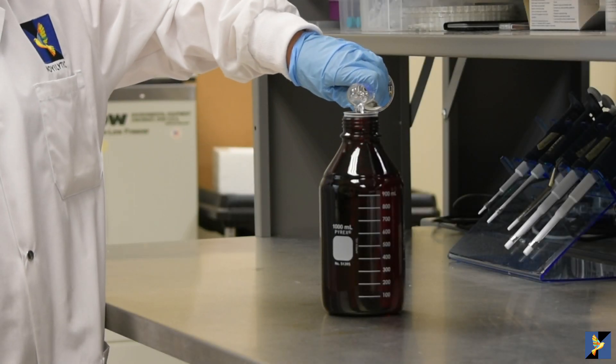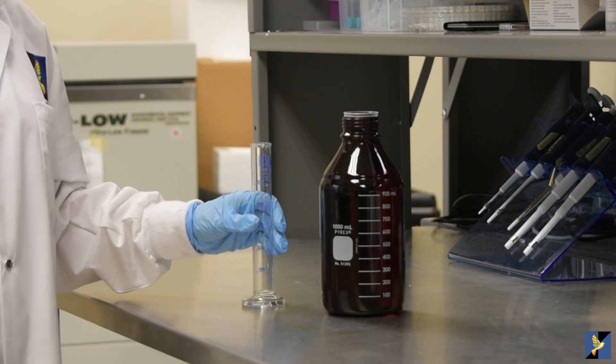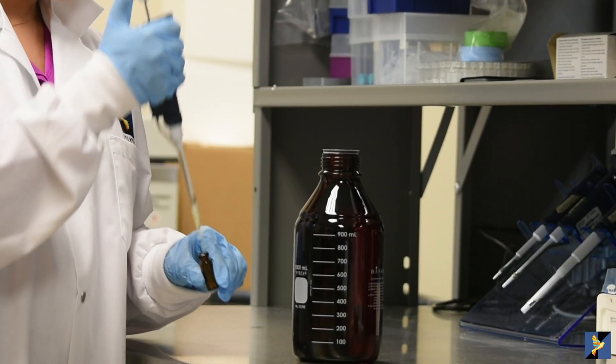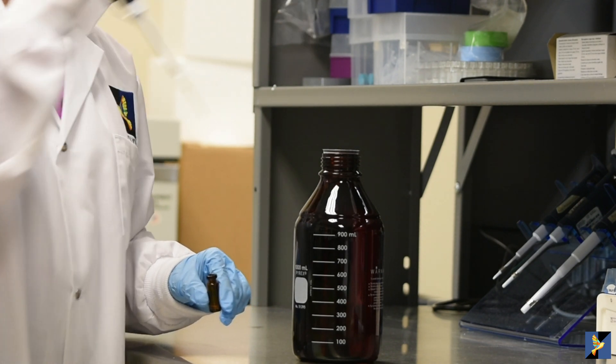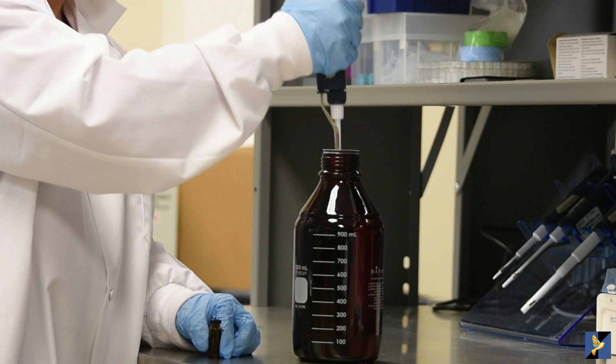Add 50 milliliters of acetonitrile to your mobile phase. Transfer the contents of the reagent vial to the bottle of mobile phase. Rinse out the contents of the vial to ensure quantitative transfer.